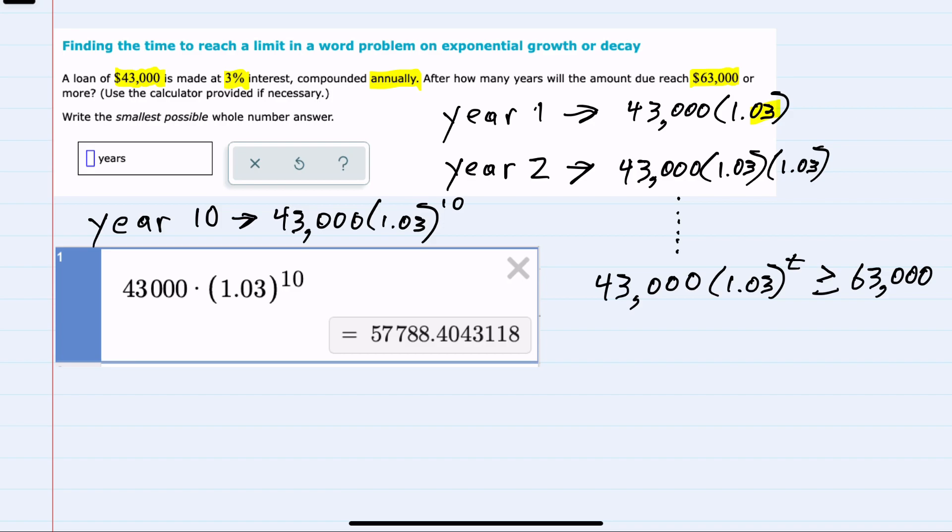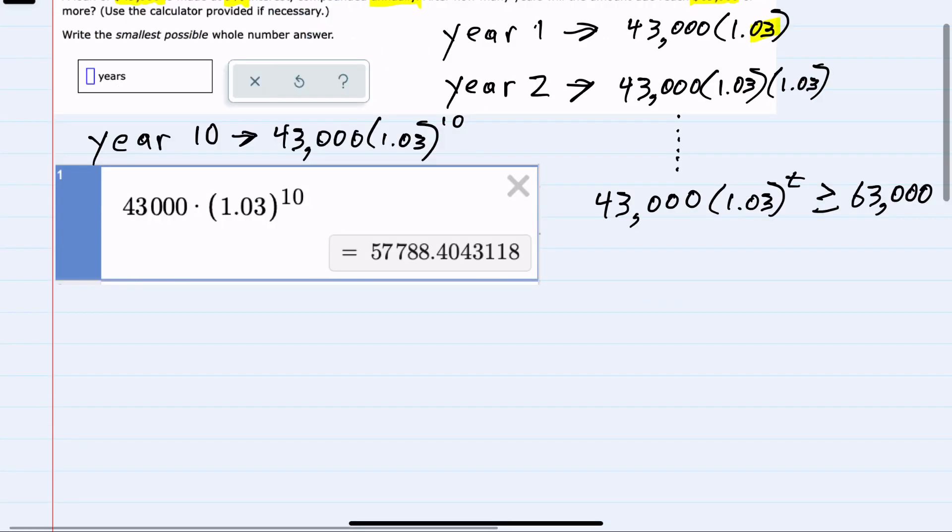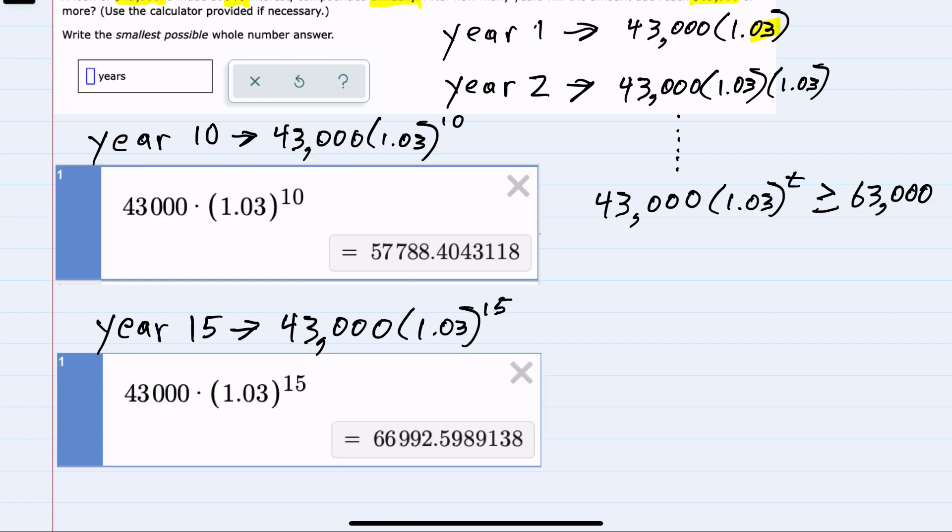But that is not more than the $63,000 that I'm trying to get to. So I can go further and maybe look at year 15, which would be $43,000 times 1.03 raised to the 15th power. Doing that calculation, I do get an amount due that's more than $63,000.